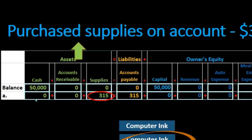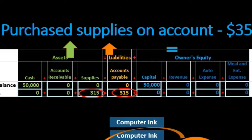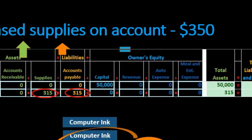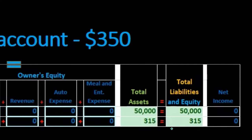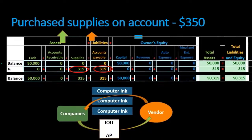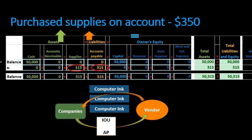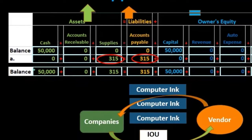Here is the transaction: we increased supplies and increased liabilities by $315. That's an increase to total assets and an increase to total liabilities, so equity remains the same. Assets go up by $315, liabilities go up by $315, and the accounting equation stays in balance. There is no impact on net income. We then add up the beginning balances plus the current transaction to get ending totals — cash remains $50,000.